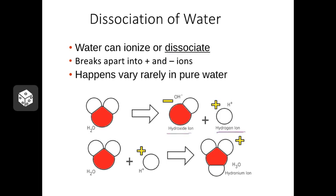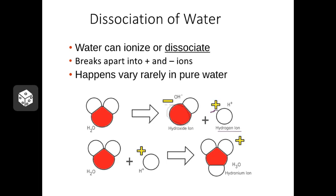When a water molecule breaks down, that electronegative oxygen atom is going to steal the electron from hydrogen and actually kick that little hydrogen out all by itself. Because the oxygen has gained an electron, it has a negative charge. The hydrogen ion has lost its electron, so it has a positive charge. The result of this reaction is an ion called hydroxide, OH-, and an ion called hydrogen, H+.